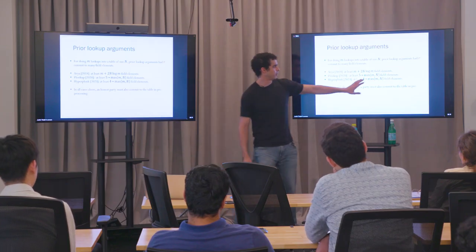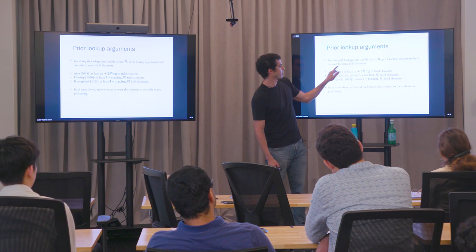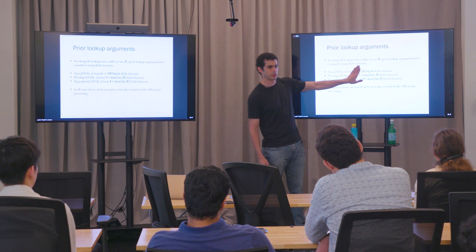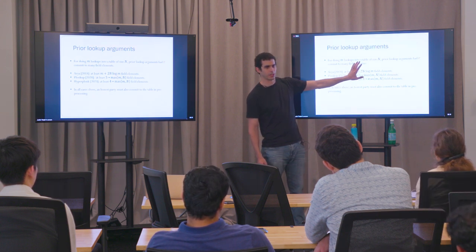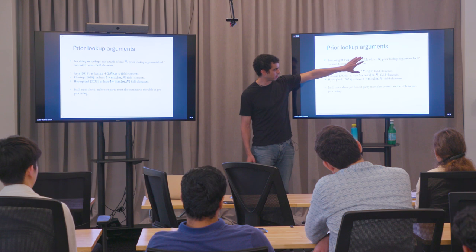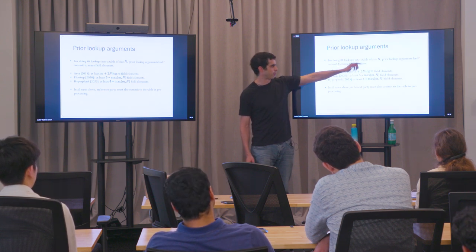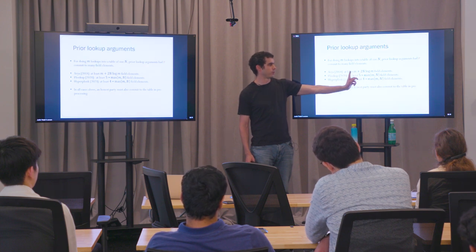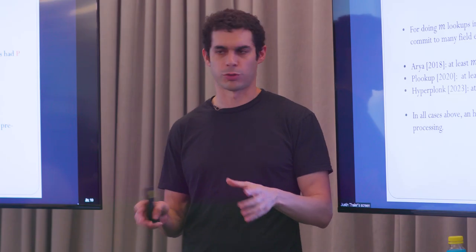Lookup arguments are very good amortizers. If you focus on ARIA: there's always an N·log(M) term — N is the table size. If you ignore the log M, that term is fixed: no matter how many lookups you do, you pay it once. Then there's the M term, which you think of as one field element per lookup. With bit decomposition, it's 128 field elements per lookup. So the amortization benefit grows as you do more lookups into the same table.